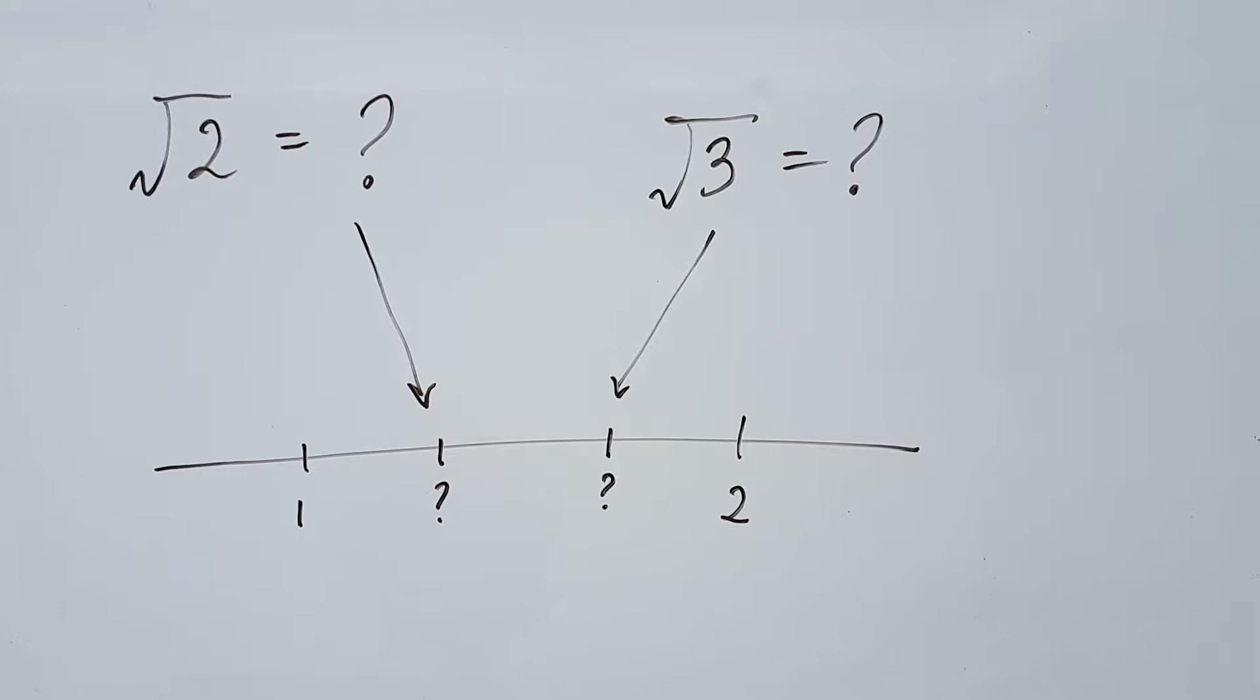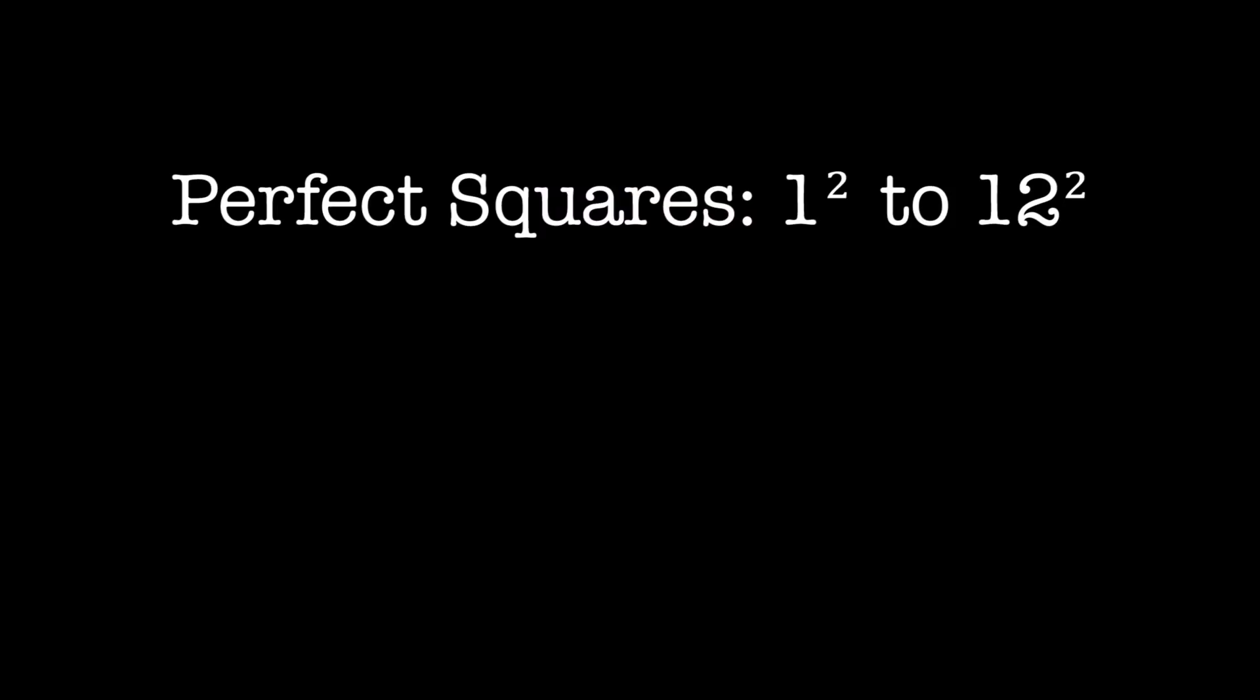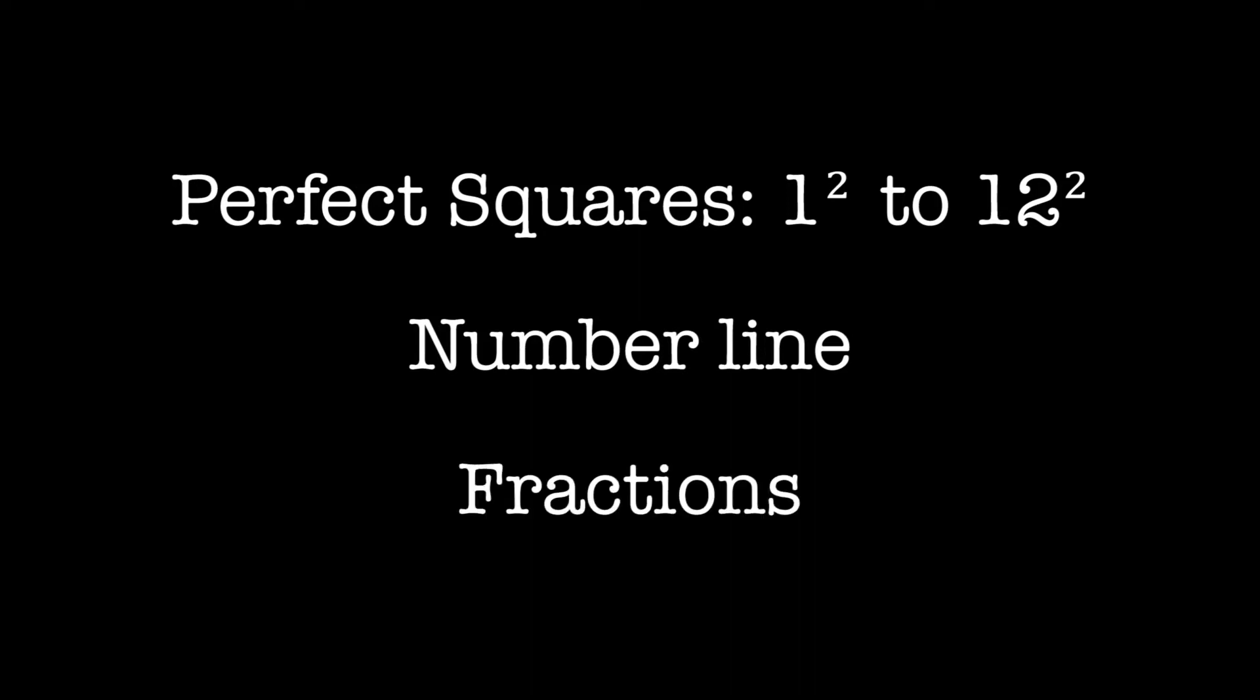But for the most part, you don't need to get a precise value for these numbers. So today I'm going to show you how to get a rough estimate using three simple tools: perfect squares from 1 to 12, the number line, and simple fractions.